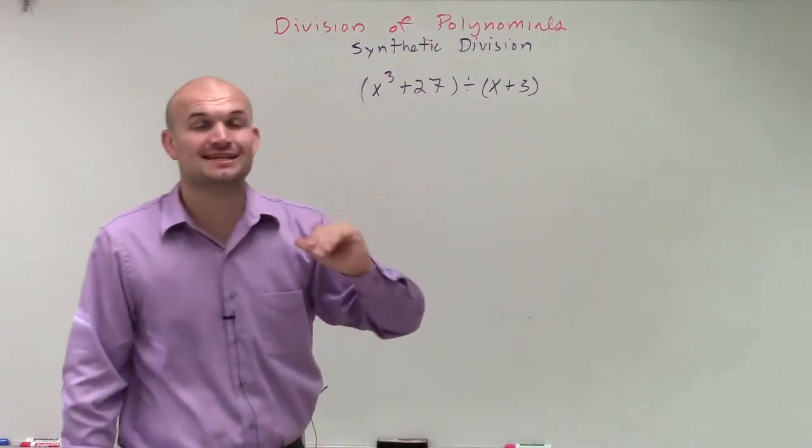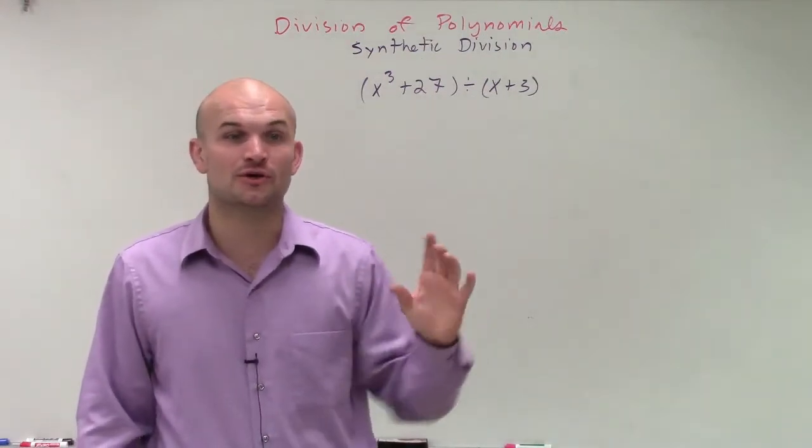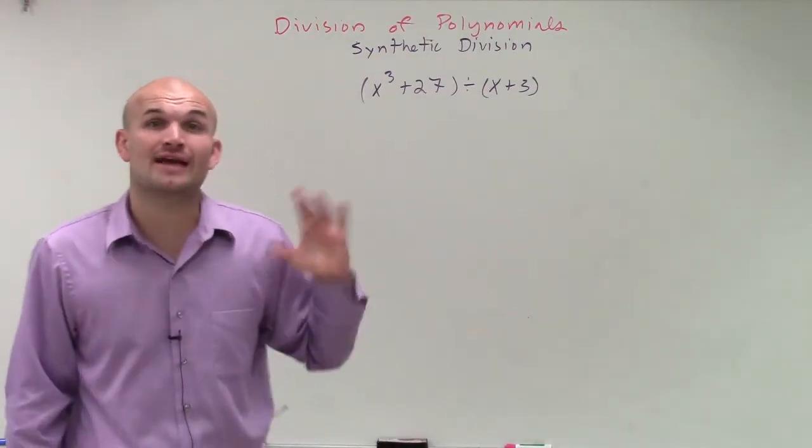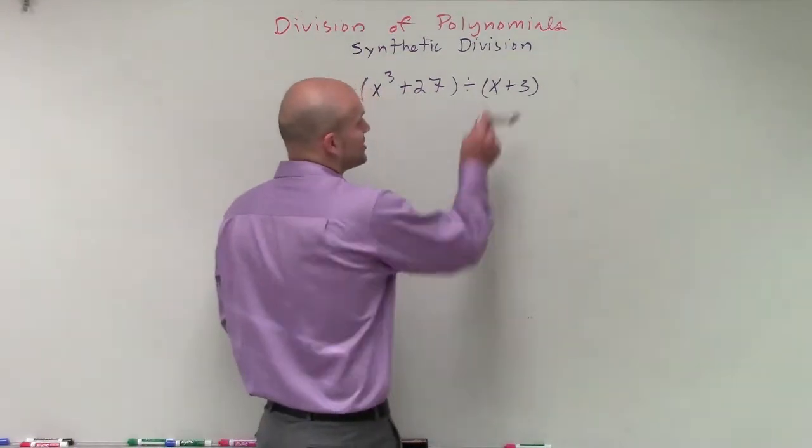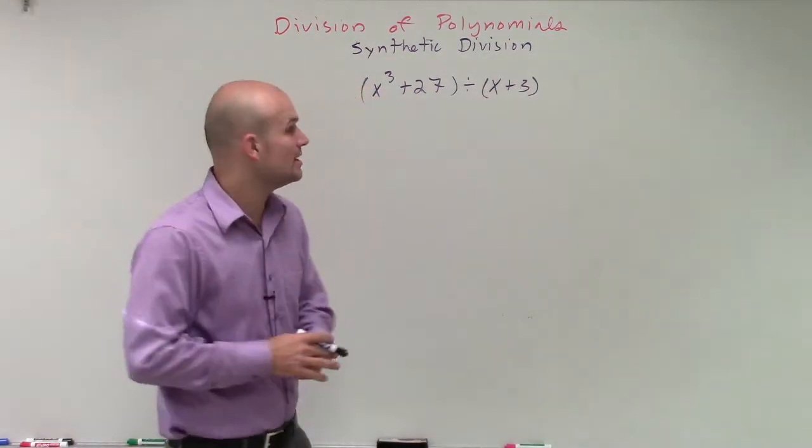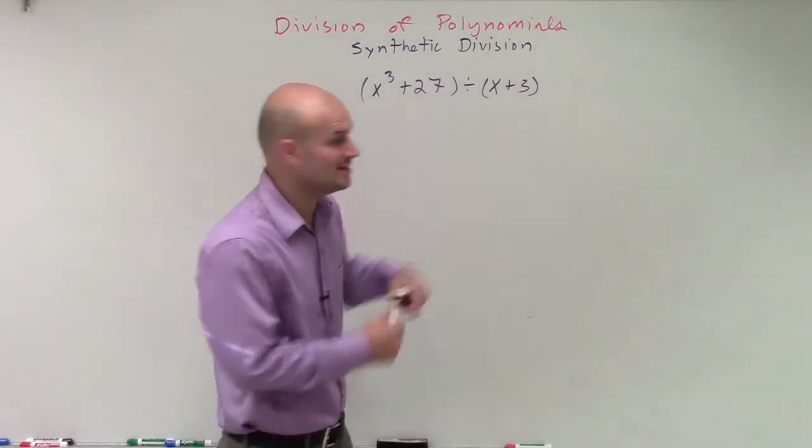So when we're writing the synthetic division problem, we need to make sure we also include the place value for x squared and x. But the main first thing we always want to look at is our divisor. Make sure that it's linear and in the form of binomial, which in this case it is.